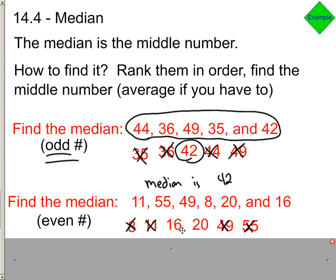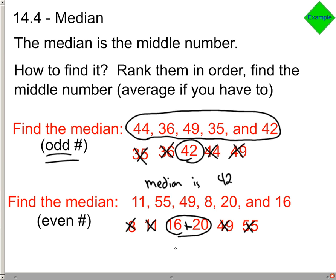What you need to do is add these two numbers together that are left over. 16 plus 20 is 36, and then you divide it by 2 to find the average. That's what we're talking about—average if you have to. 36 divided by 2 is 18, so 18 is the median.